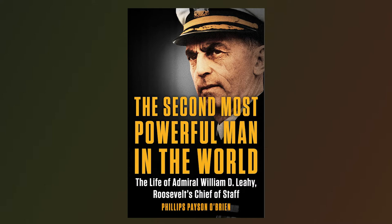Phil's first book examined the Anglo-Japanese Alliance 1902 to 1922 — the first agreement of this kind between a western and non-Caucasian nation in the modern era, why it succeeded and why it ended. In 2015 he published How the War Was Won: Air-Sea Power and Allied Victory in World War II, which shifts the focus from land battles and argues that naval and air battles were far more decisive. Most recently in 2019 Phil finished his biography of Admiral William D. Leahy — Roosevelt's chief of staff and the second most powerful man in the world, who became de facto president when Roosevelt's health started to fail.